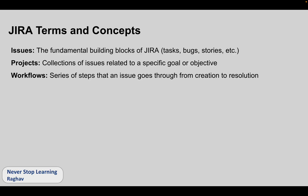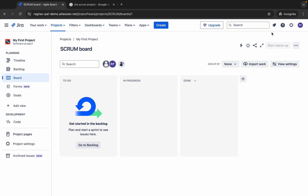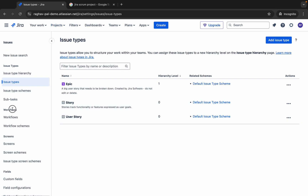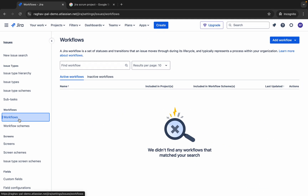Then we have Workflows. A workflow is the series of steps that an issue goes through from creation to resolution. This can be decided by you based on your project needs. When an issue is created it starts as 'to do', then transitions to 'in progress', then 'review', then 'done'. This is the workflow, and you can decide it for your project. If I go to my Jira settings and go to Issues, we can see the workflows section.